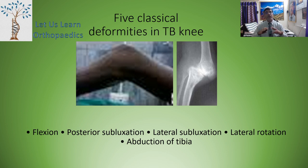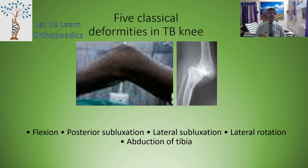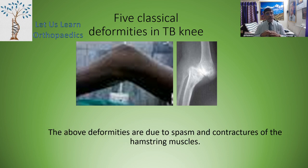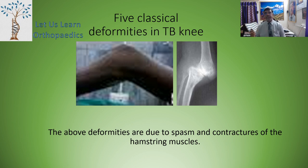There are five classical deformities described in tuberculosis of the knee: first, flexion of the knee joint; second, posterior subluxation; third, lateral subluxation; fourth, lateral rotation; and fifth, abduction of the tibia. These deformities are due to the spasm and contracture of the hamstring muscles. Classically, though there are five deformities, as a standard teaching we call it a triple deformity or a quadruple deformity, which we will see in the later slides.